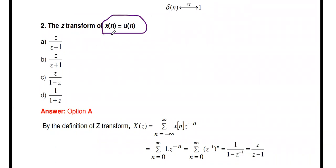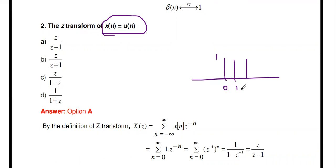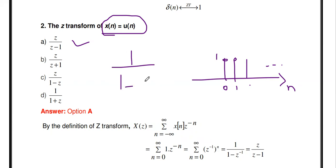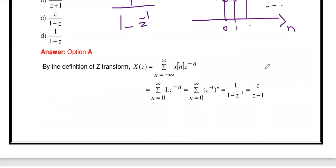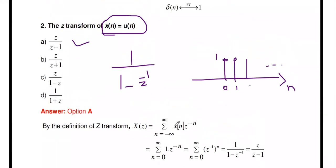The Z-transform of x[n] = u[n], the discrete unit step signal. The discrete unit step has amplitude 1 from time zero to infinity — it's constant at one. The Z-transform of the discrete unit step is z/(z-1), which is also written as 1/(1 - z⁻¹). The detailed solution is available in the lecture videos on the channel.